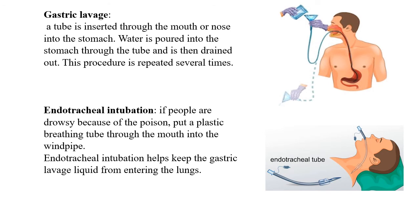In gastric lavage, a tube is inserted through the mouth or nose into the stomach; water is poured into the stomach through the tube and then drained out. This process is repeated several times and is helpful to remove unabsorbed poisons from the gastrointestinal tract.